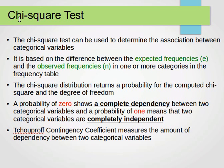The third technique is the chi-square test. Get your notes and pens ready. The chi-square test can be used to determine the association between categorical variables. It is based — always remember this — on the difference between expected frequencies and observed frequencies. The chi-square distribution returns a probability for the computed chi-square and the degree of freedom. A probability of zero shows complete dependency between the two categorical variables, and a probability of one means the two variables are independent.